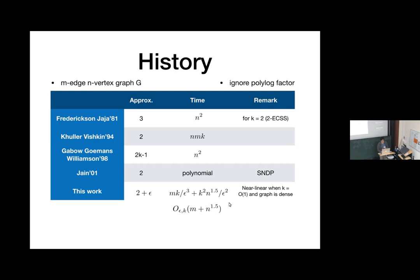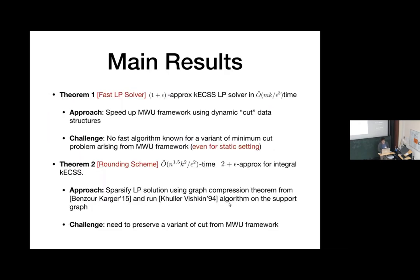The key approach here is to solve the LP fast enough. The main result is a fast LP solver: we can solve a 1-plus-epsilon approximation of the KCSS LP in mk over epsilon squared time. This is based on the multiplicative weights update framework, using some dynamic cut data structures. The challenge is that there is no fast algorithm for this variant of the minimum cut problem, even in the static setting.